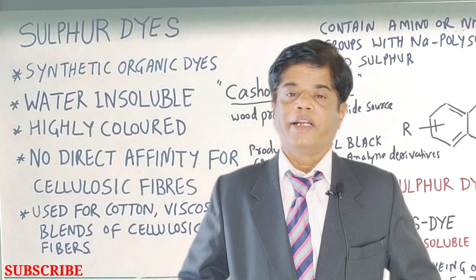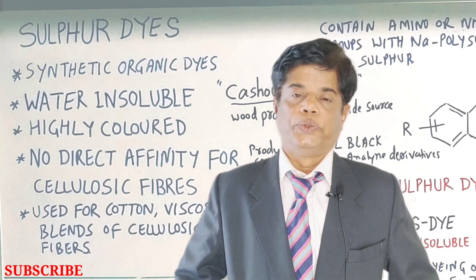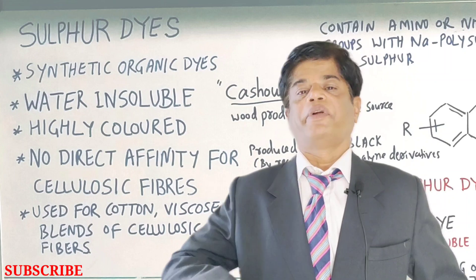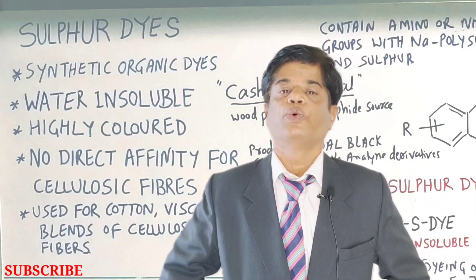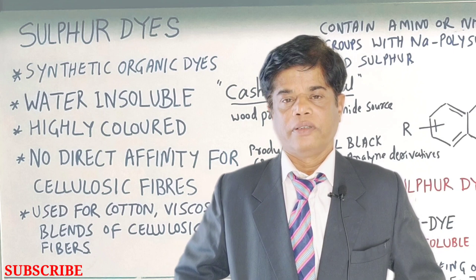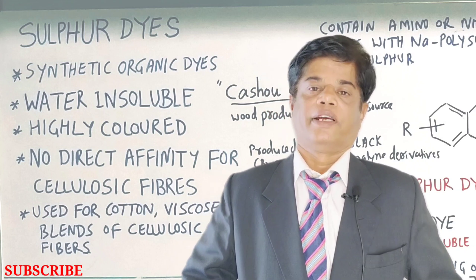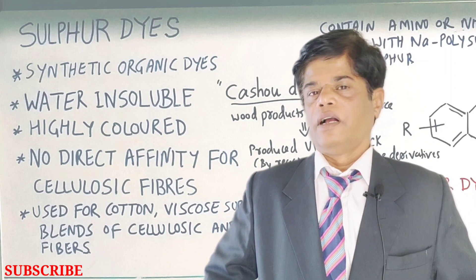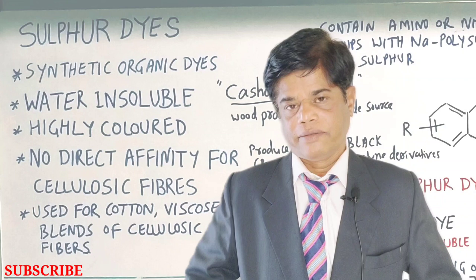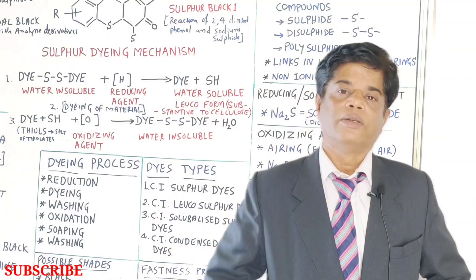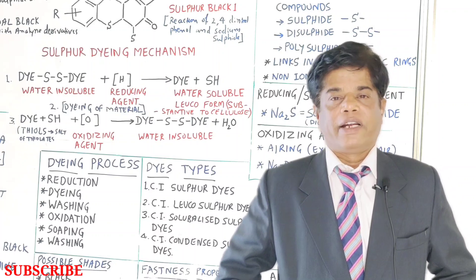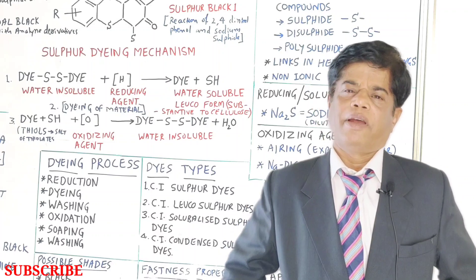It is called an organic dye because the raw material used to produce sulfur dye is a wood product. That wood product is used to produce sulfur dye, and that is the reason it is called organic.